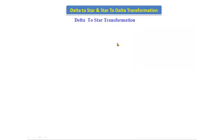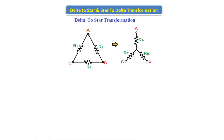Hello everyone, today we are going to discuss about the delta-to-star and star-to-delta transformation. We have the series connection and the parallel connection, and with those we have one more connection, that is delta and star connection. Suppose if the circuit is connected in the form of delta and star, how we will solve the equation using formulas — that we will discuss now. This is the star, this is the delta connection, having three terminals A, B, C.